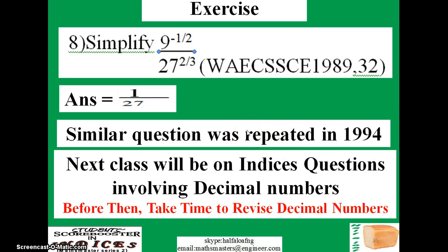Here is an exercise for you: WAEC 1989 question 32. Try to work it out — the answer is provided, and a similar question was repeated in 1994. By the grace of God, our next class will be on indices involving decimal numbers. I advise you to revise decimal numbers before then. Study very well, and I wish you the best of luck. See you then.